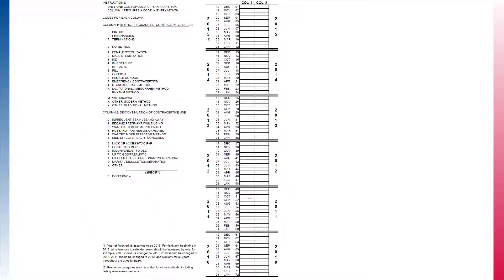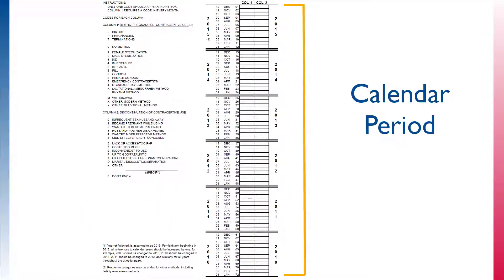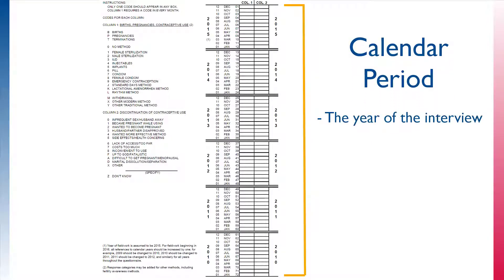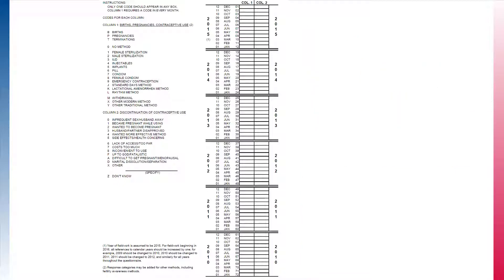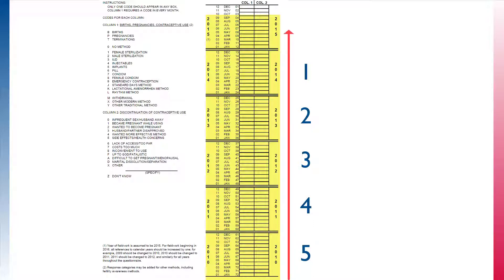Although the calendar is one page, it can contain more than five years of data for the calendar period. The calendar period includes the year of the interview up to and including the month of the interview, plus five full years preceding the year of the interview. For example, if the interview took place in September of 2015, the calendar would cover all of 2015 up to and including September, plus five full years before 2015, from January 2010 through September 2015.